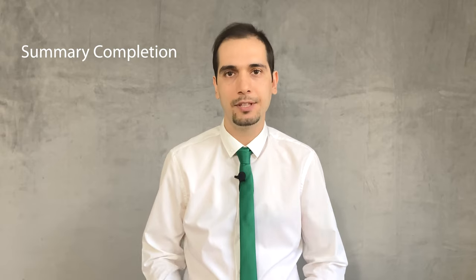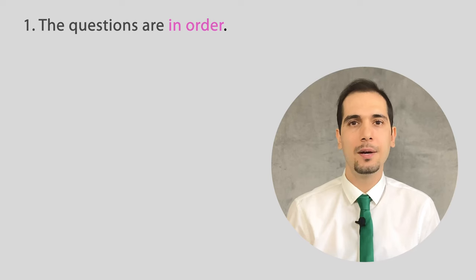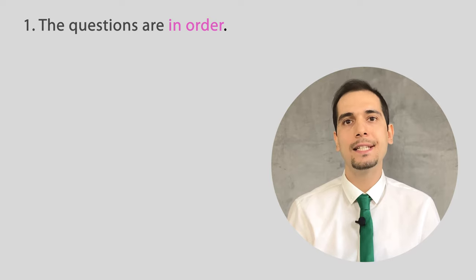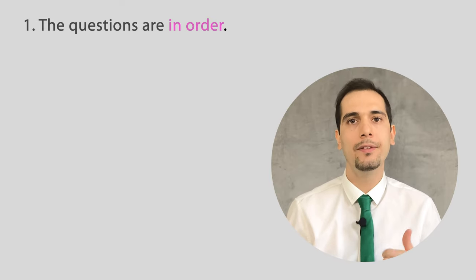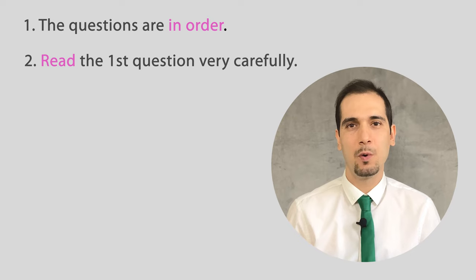This is the second type of reading questions: summary completion. A summary completion type is pretty easy and straightforward — it's like gap-fill questions, but the difference is that you have been given some options to choose from. Don't forget that the questions are still in order: number one, two, three, four — they appear in order in the text.